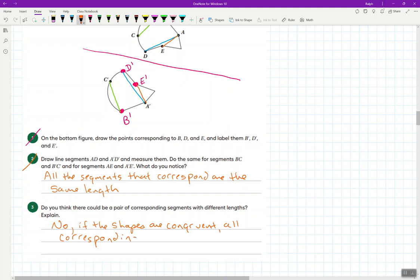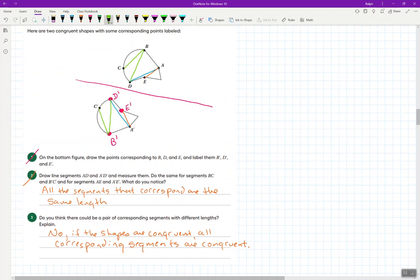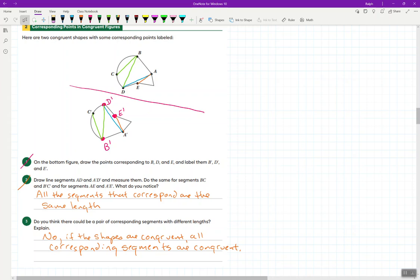And so for question number three, it's asking us to just extrapolate on this. Do you think there could be a pair of corresponding segments with different lengths? Well, it's driving the point home that no. If the shapes are congruent, all corresponding segments are the same. All corresponding segments are congruent. That means no matter what distance, whether it be on the outside, inside, interior, it will be the same, even if we add up distances. So the takeaway from here is that we are looking at all dimensions. It's not necessarily just exterior dimensions or interior angles. Any segment within two congruent shapes that are corresponding will be congruent. So at this point, please pause the video if needed.